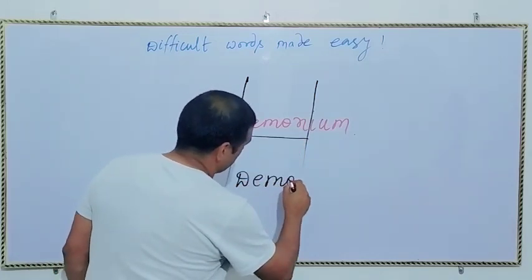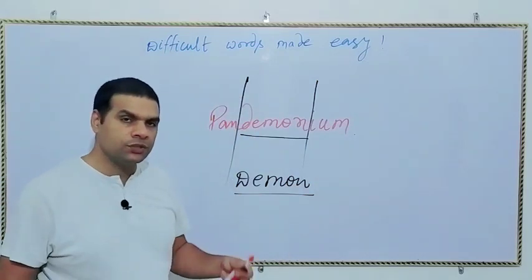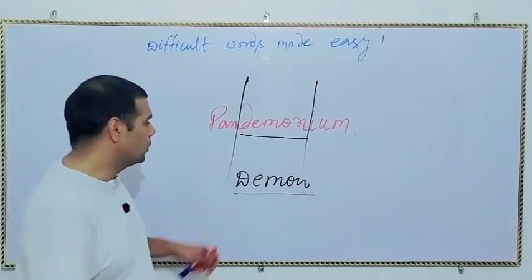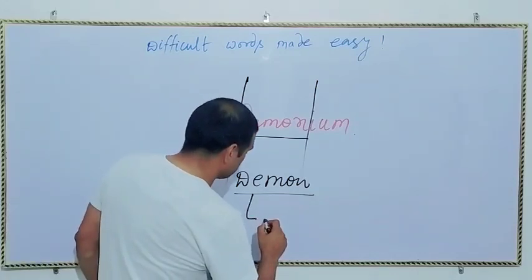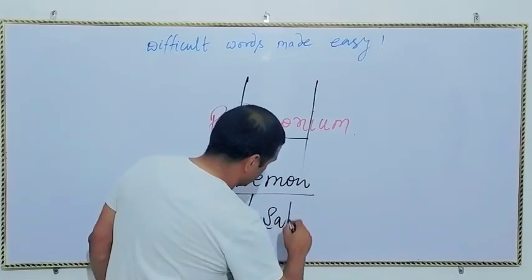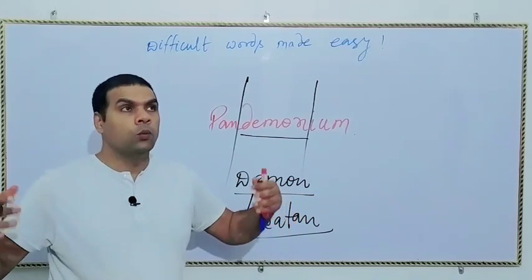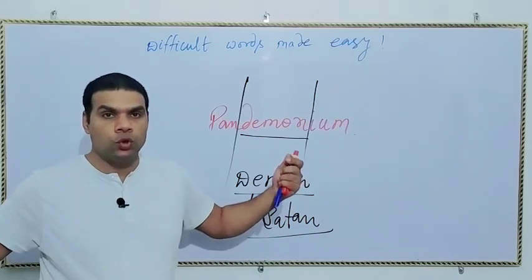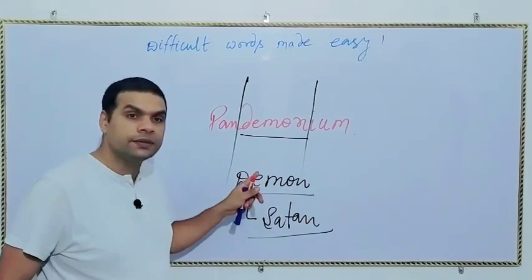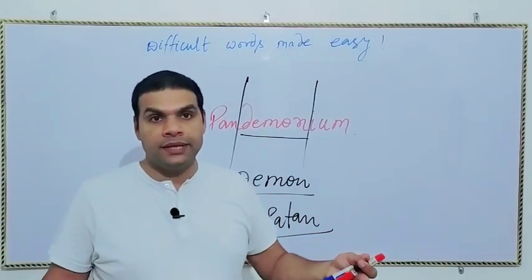So this one is demon. This is a fairly common word. When I was younger I would call it demon, but the correct pronunciation is demon, which means actually a monstrous figure, a wild figure, something like a satan - satan or monster or someone very bad, violent and strong character. That's what you call a demon.